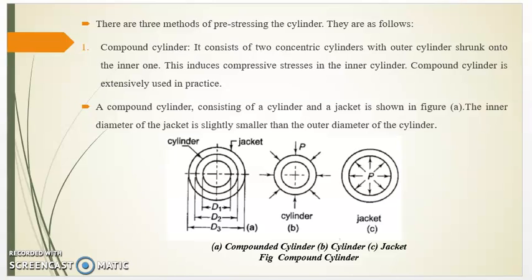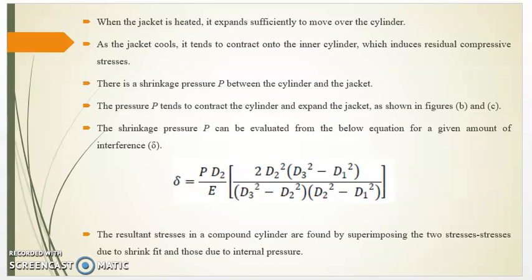This induces compressive stresses in the inner cylinder. Compound cylinders are extensively used in service. A compound cylinder consists of a cylinder and a jacket. The inner radius of the jacket is slightly smaller than the outer radius of the cylinder. When the jacket is heated, it expands sufficiently to be placed over the cylinder. As the jacket cools, it tends to contract onto the inner cylinder, which induces residual compressive stresses. There is a shrinkage pressure P between the cylinder and the jacket, which tends to compress the cylinder and expand the jacket.